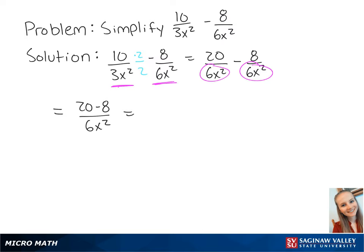which is equal to 12 over 6x squared, which finally gives us 2 over x squared. This is the final answer.